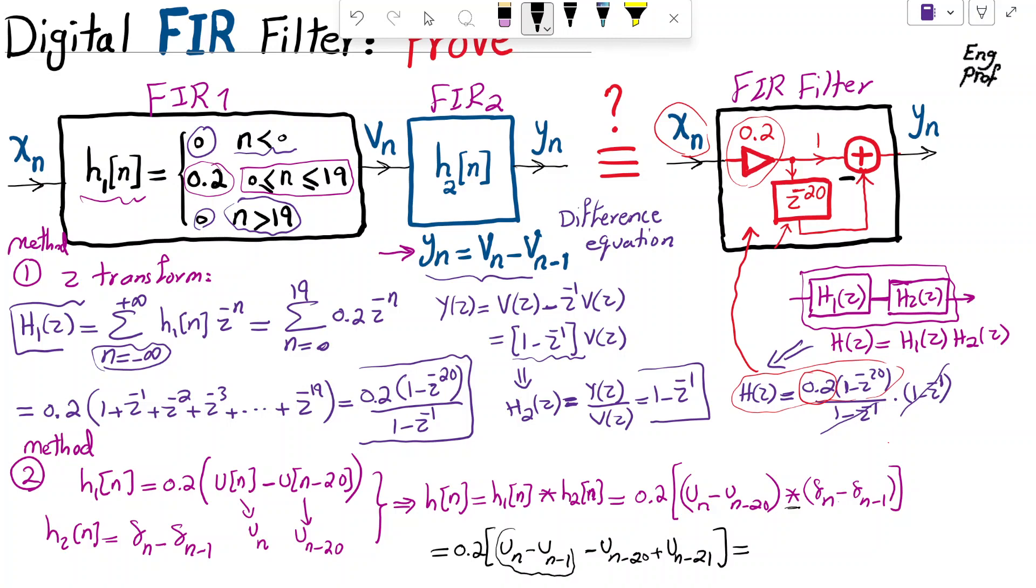Very nice. This is, by definition, delta N. And this one is, by definition, negative delta N minus 20. So effectively, we get to 0.2 delta N minus delta N minus 20, which is exactly,